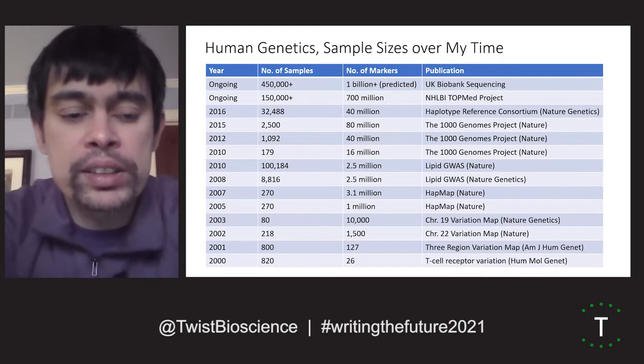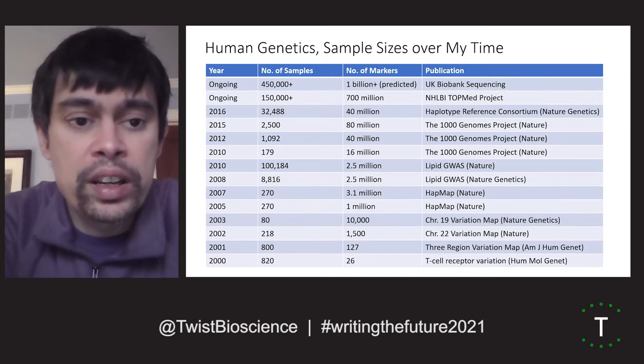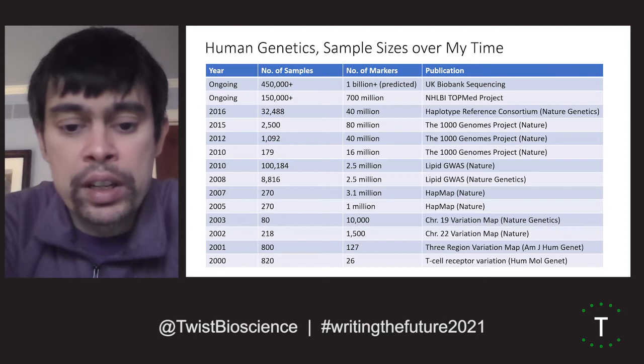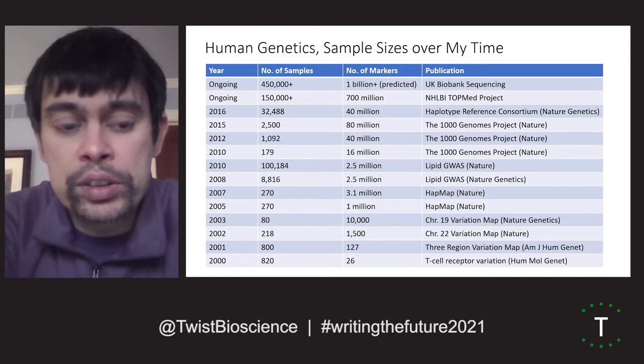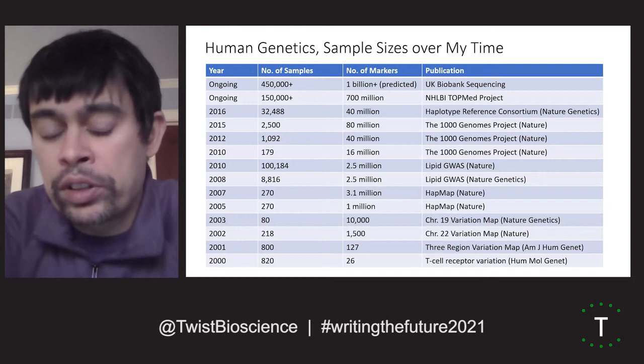One of the big things that has happened in human genetics, if you look back over the past 20 years or so, is just the scale and level of detail that's possible for these studies. In the early 2000s, we were really limited to looking at hundreds of samples with sometimes just a handful of genetic variants. As technology improved, around 2005 to 2010, it really started to be possible to look genome-wide, at millions of genetic variants, and systematically capture all variation.